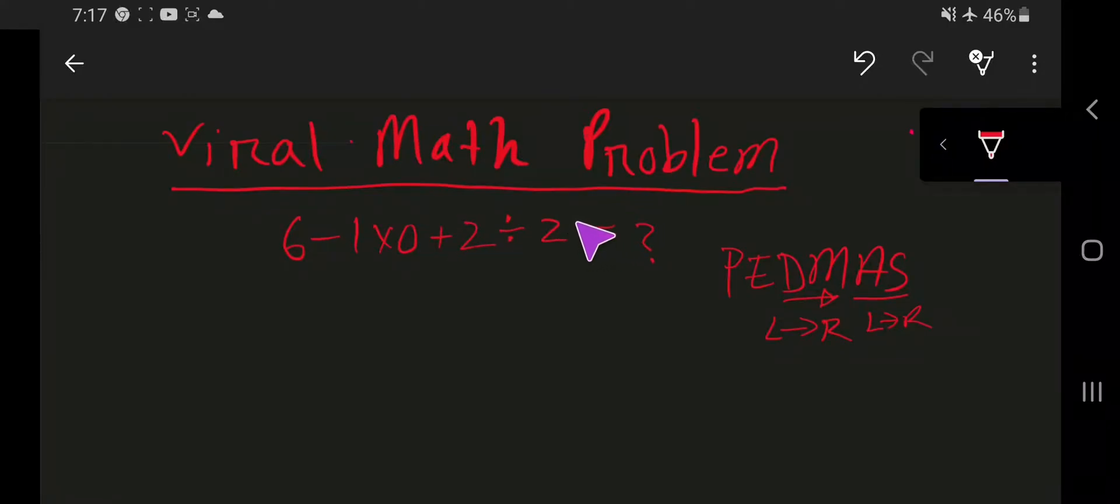Real math problem. Today we are going to solve this problem: 6 minus 1 times 0 plus 2 divided by 2 equal to what?